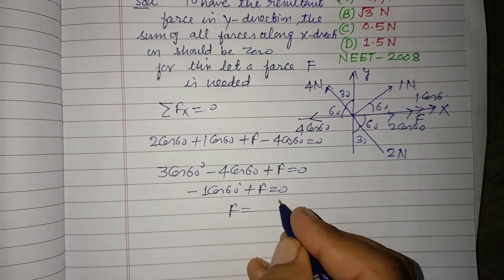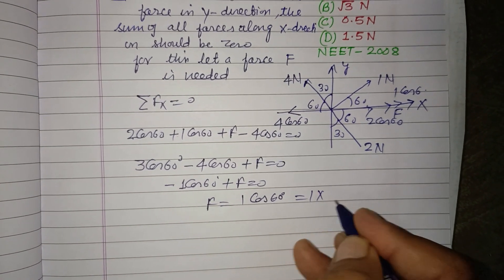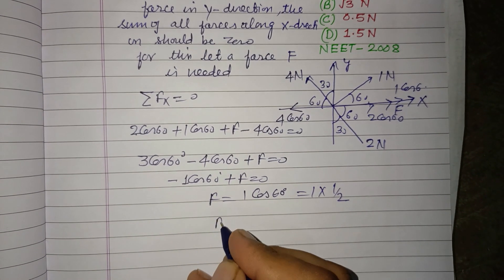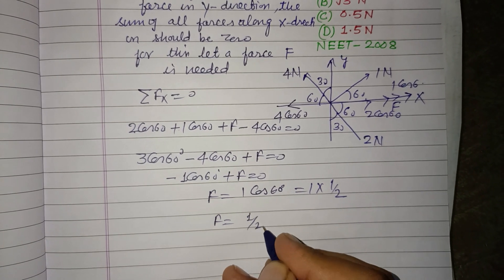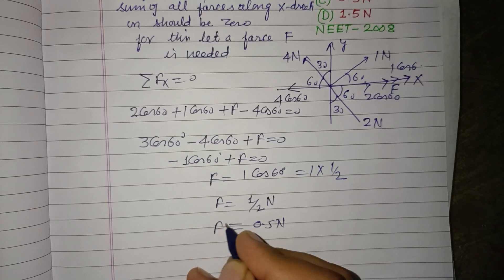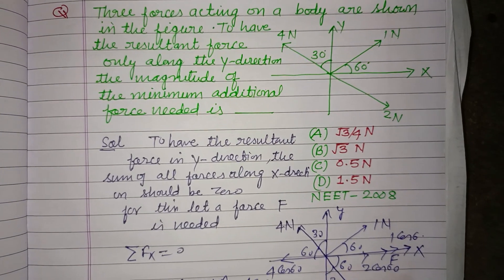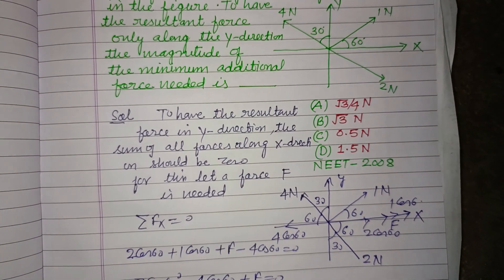F equal to 1 cos 60°. This is 1 into 1 by 2, so this is 1 by 2 Newton, that is 0.5 Newton. 0.5 Newton is the additional force which is required to balance the x component.